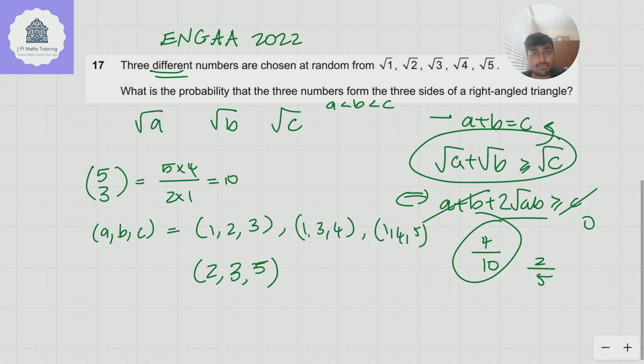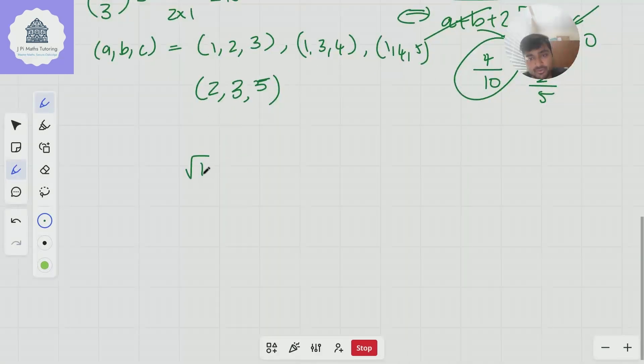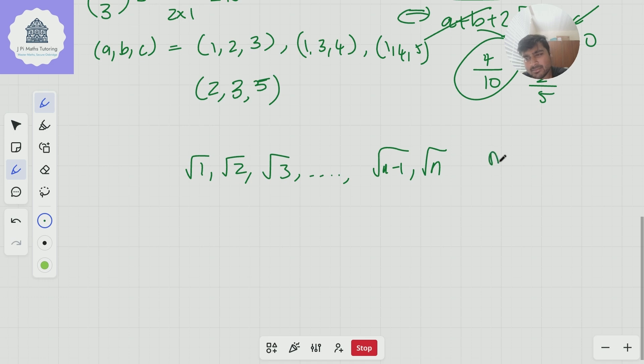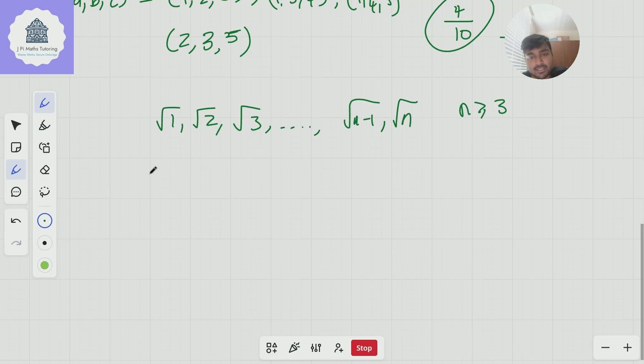Okay let's look at the mathematical generalization so a slightly more interesting problem is what if we make this up to root n so if we're choosing three numbers from root one root two root three all the way up to root n like so and here n is a positive integer at least three.